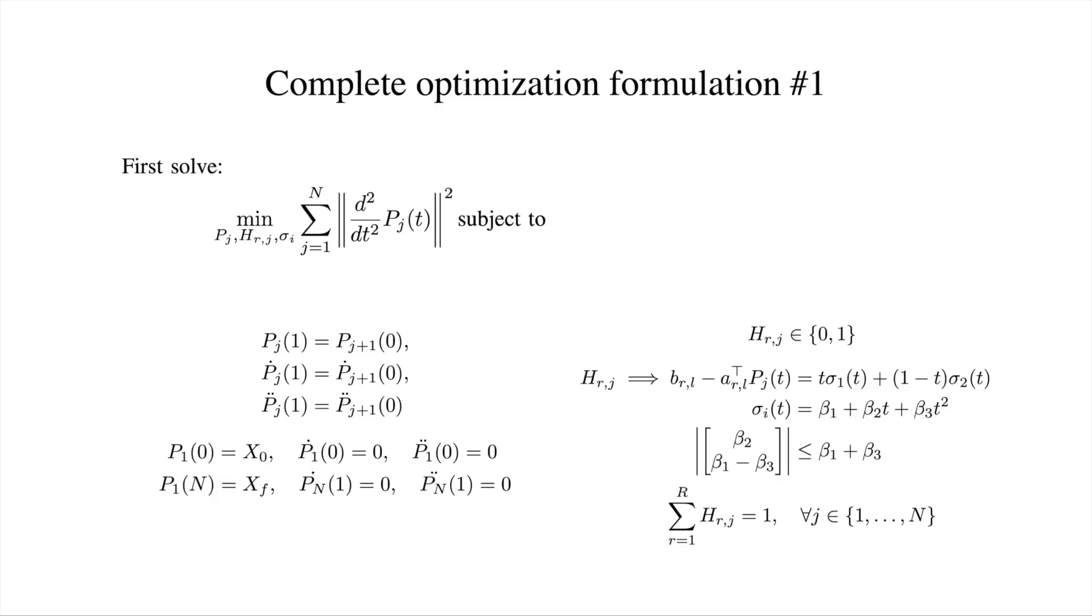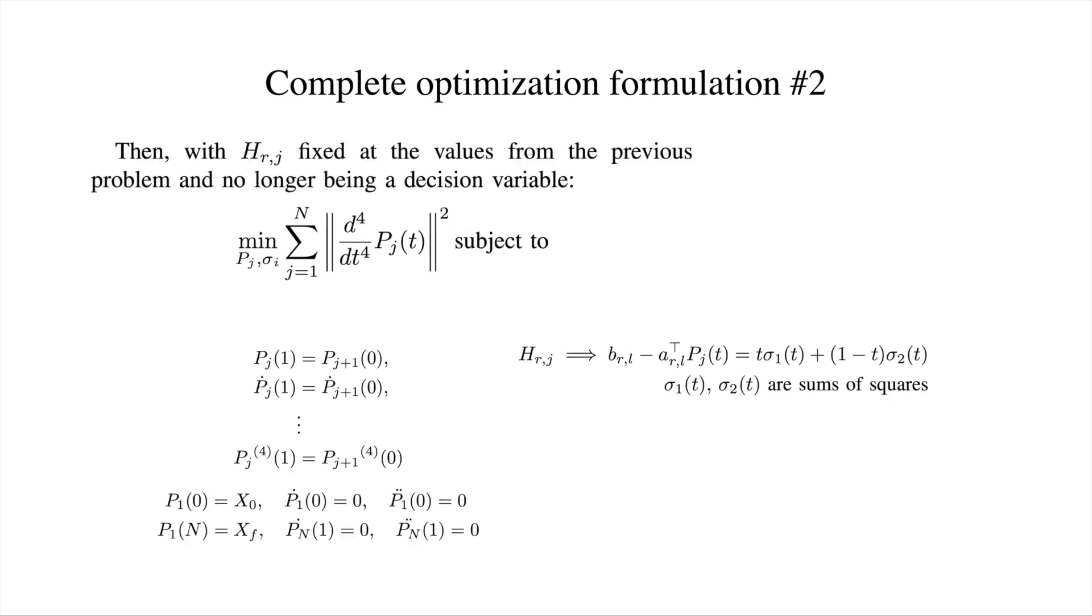To make the optimization problem feasible, it is solved in two steps. First, a slightly relaxed version of the problem is solved to get the assignments of the binary decision variables. Then, the full problem is resolved using the previously computed values of the binary decision variables.